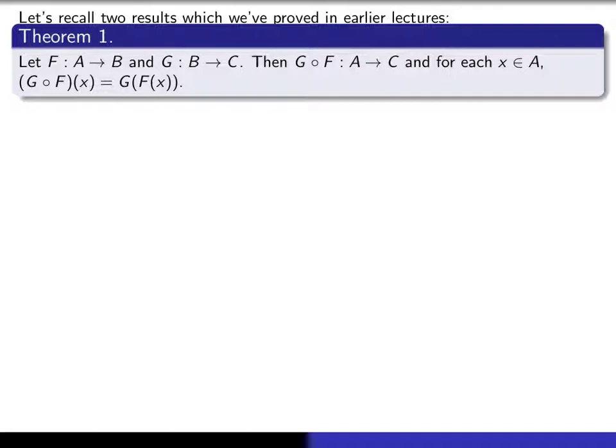The first one says that if we have two functions, one function from A to B, and another function from B to C, then when you take the composition, g composed with f,